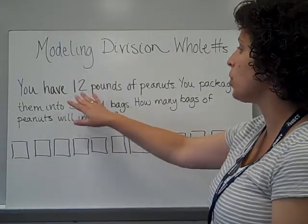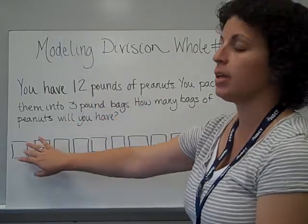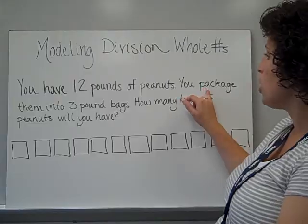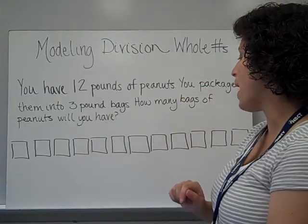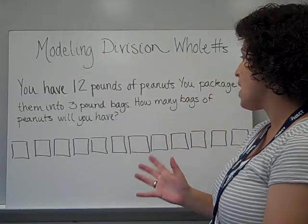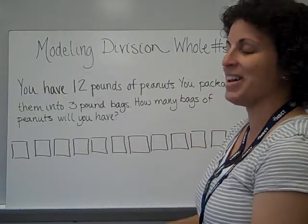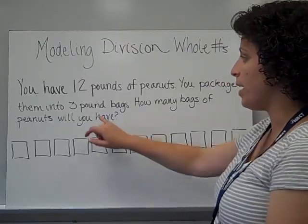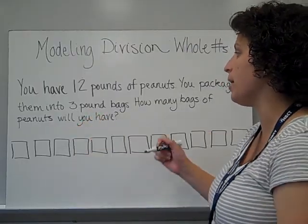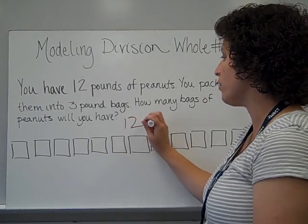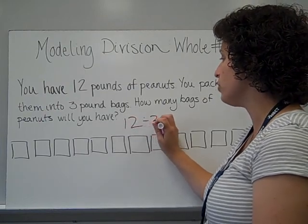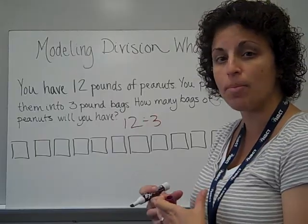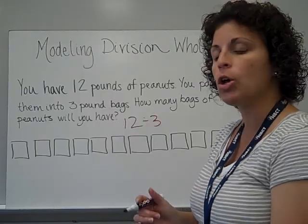Here's our problem. You have 12 pounds of peanuts. Each of these squares represents a pound. You package them into 3-pound bags. How many bags of peanuts will you have? So if these are my 12 pounds, and we're going to package them into 3-pound bags, what we're really solving is 12 divided by 3, because we want to see how many groups of 3 pounds we can make.